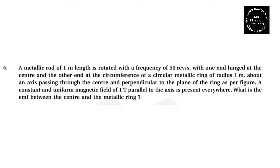Example 6.6: A metallic rod of 1 meter length is rotated with a frequency of 50 rpm, with one end hinged at the center and the other at the circumference of a circular metallic ring of radius 1 meter, about an axis passing through the center and perpendicular to the plane of the ring. A constant uniform magnetic field of 1 tesla parallel to the axis is present everywhere. What is the EMF between the center and the metallic ring?